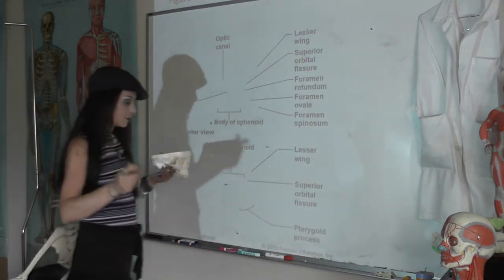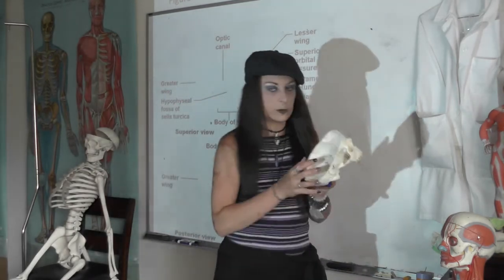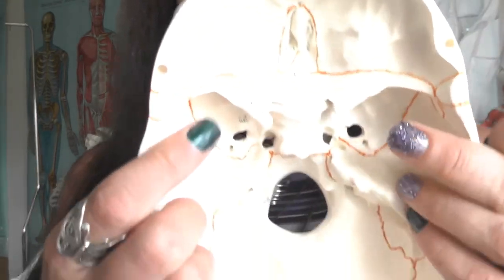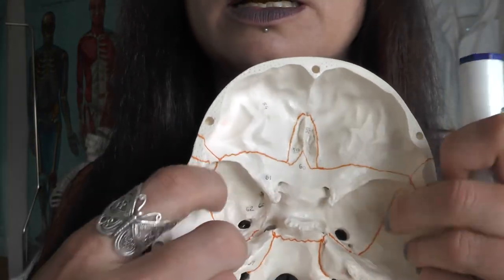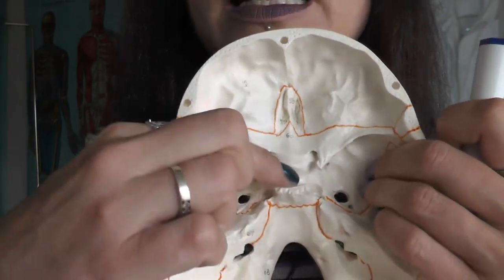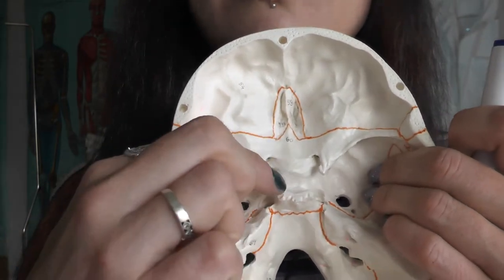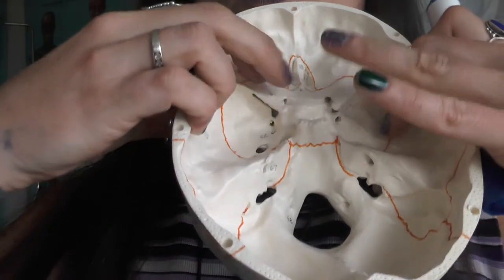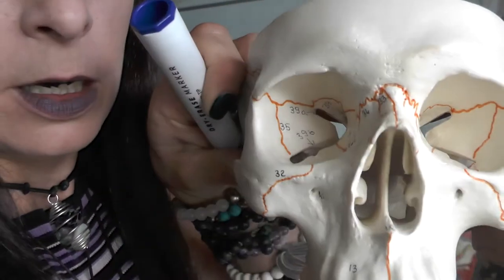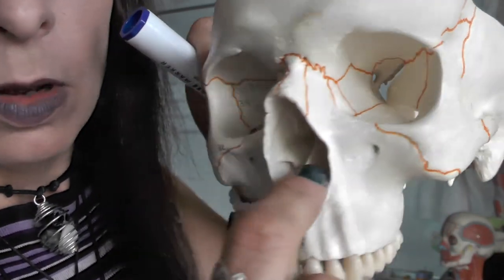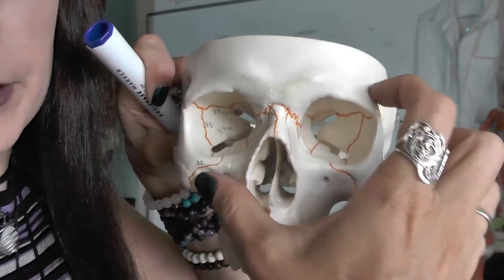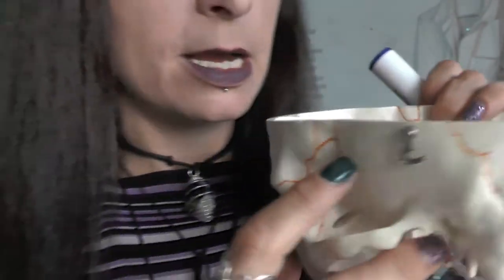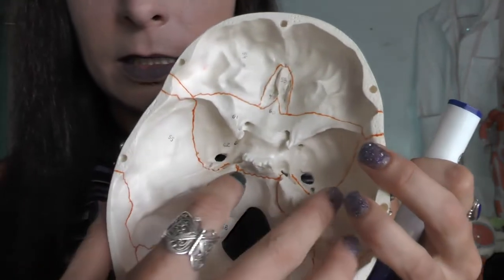The sphenoid bone is weird but also really cool. The sphenoid bone looks like the Mothman to me — lesser wings, greater wings. This thing right here is where your pituitary sits; it's called the sella turcica. Optic nerves go through there and come out through the optic canals. Superior orbital fissures. Inferior orbital fissures. The assistant is going to tell you all that stuff.